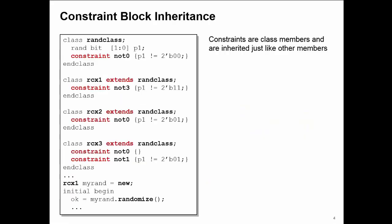Constraint items are normal class members, and in inheritance they're treated just like any other class member. Here in my base class randclass, I have a constraint with the name NOT0 that says that P1 cannot be equal to zero.